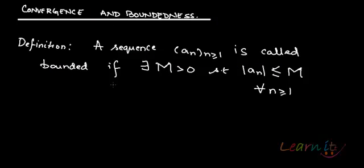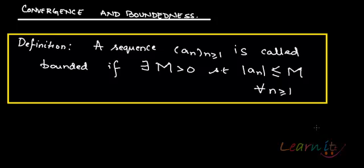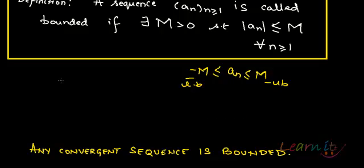Today let's talk about convergence and boundedness. By definition, what do we mean by a bounded sequence? Any sequence a_n, n greater than or equal to 1, is called bounded if there exists an M such that |a_n| is less than or equal to M for all n greater than or equal to 1. So a_n lies between -M and M — it has both an upper bound and a lower bound. A bounded sequence is a sequence whose terms are contained in an interval.